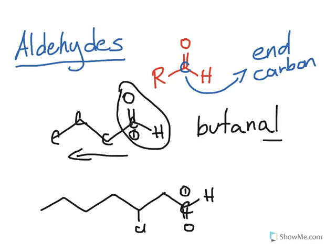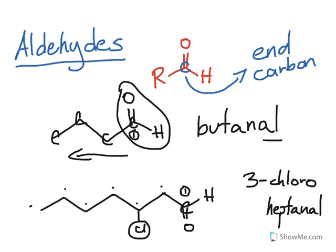That's two, three, four, five, six, seven carbons. The root name, since it's seven, is heptanal. We have a halide on carbon three, so this is 3-chloroheptanal. That's the name of this structure.